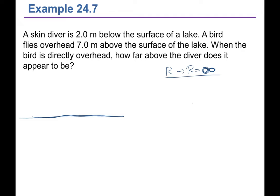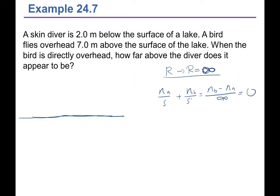Because the surface is flat, R is infinity, making the right side of the equation NA over S plus NB over S prime equal to NB minus NA over R equal to zero. This simplifies the equation so that NA over object distance equals negative NB over image distance — the flat surface refraction equation.